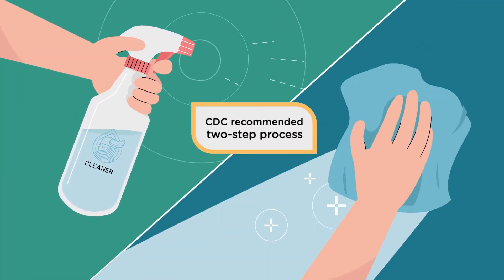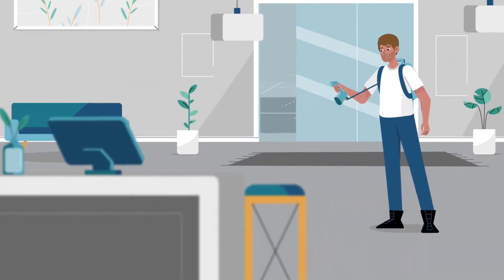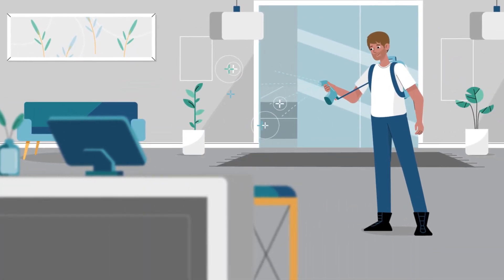Spray the cleaner. Wipe away. Then use the electrostatic sprayer to disperse the disinfectant over the entire room in seconds.